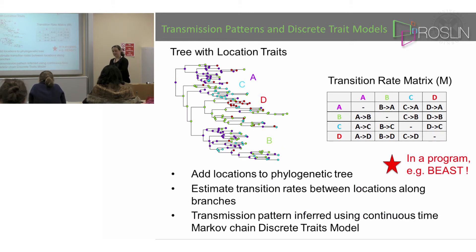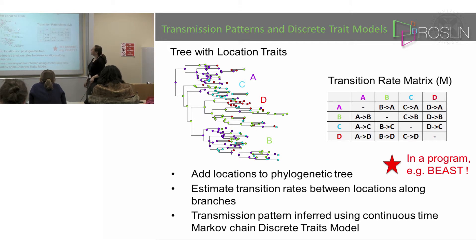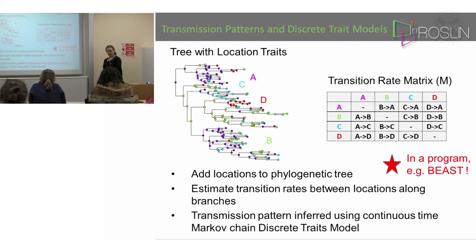In a slightly more complicated example, I now have four locations, and you'll see that I actually have many instances of the virus at each of the locations on the tree. So my goal is to infer what this matrix is. It all happens in BEAST, and you'll see how this happens, but essentially you're trying to estimate those parameters on that tree.